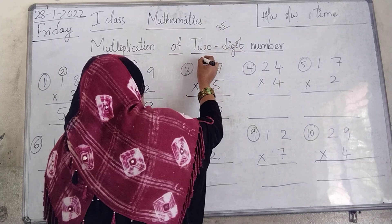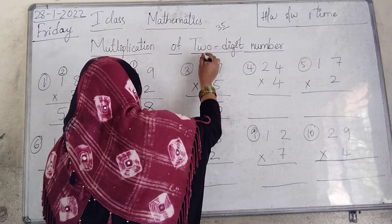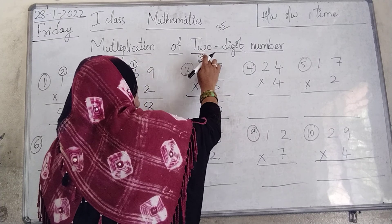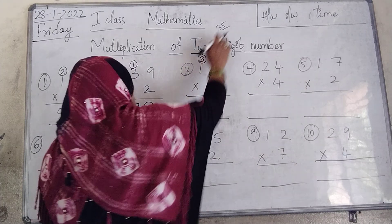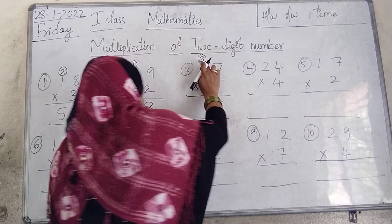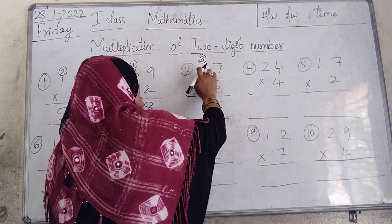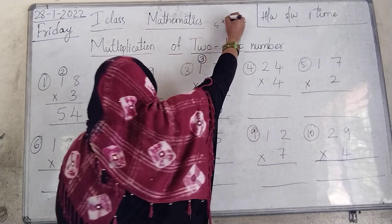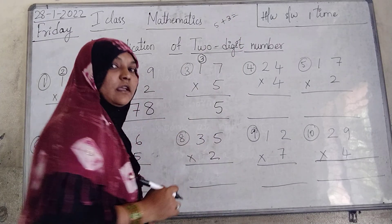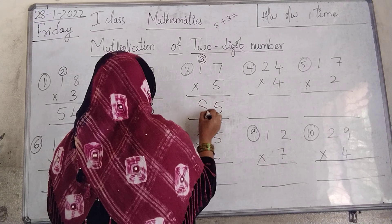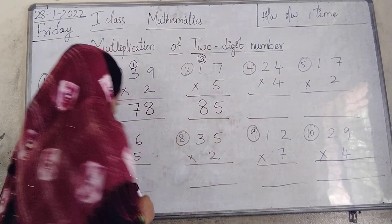And we carry 3 to the 10th place, above the 1. 5 ones are 5, plus carrying 3 equals 8. We write 8 in the 10th place. So 17 into 5 equals 85.